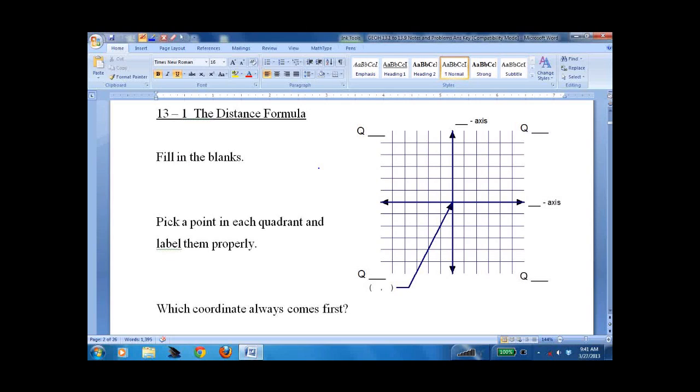So now I'll do it. We have our x and y axis. This is the first quadrant, second quadrant, always in Roman numerals. Why? I don't know, we just do. Third quadrant, fourth quadrant.